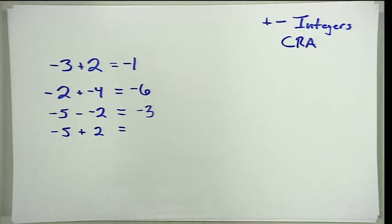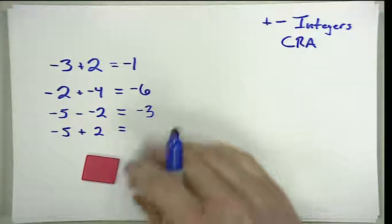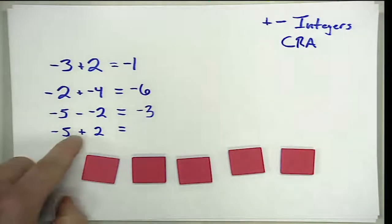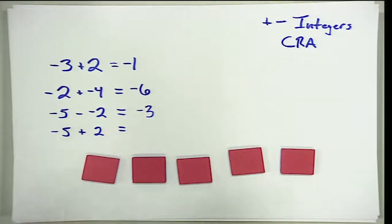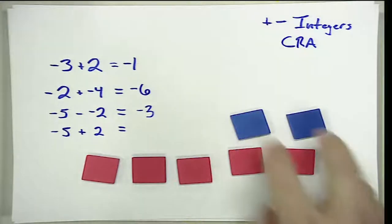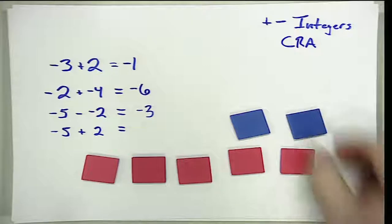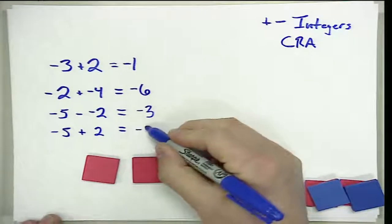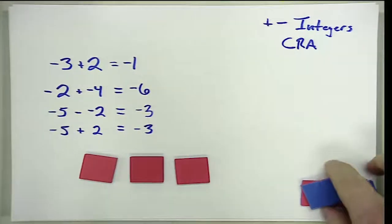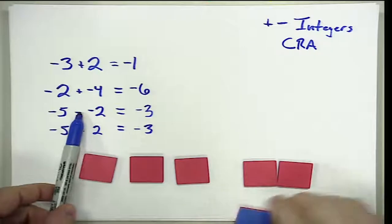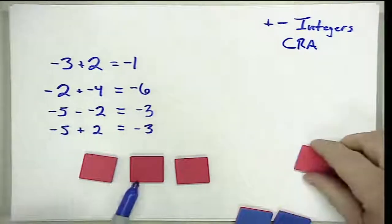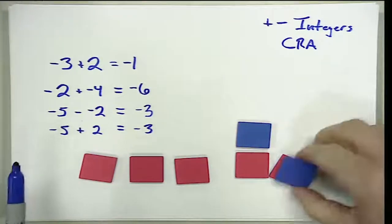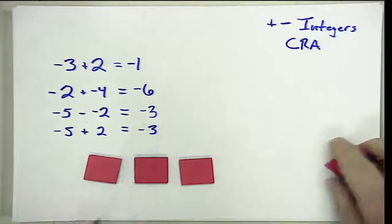If we wanted to see how the model would justify that those give us the same answer, we would model the negative 5, and then since this is an addition problem, it's telling me to put with that two positives. When I put two positives with my five negatives, we get some zero pairs, and those zero pairs cancel out, which would leave me with negative 3. You can see how subtracting two negatives from the five negatives, which left us with negative 3, is the same as adding two positives, which cancel out those two negatives and still leave us with negative 3.